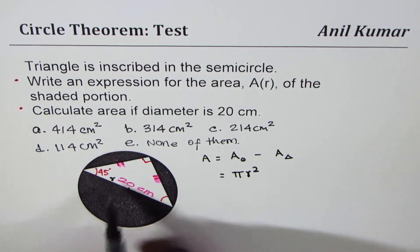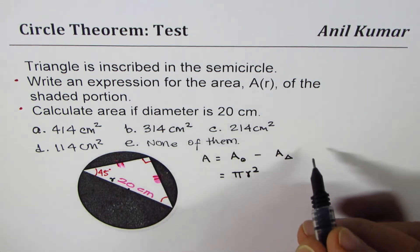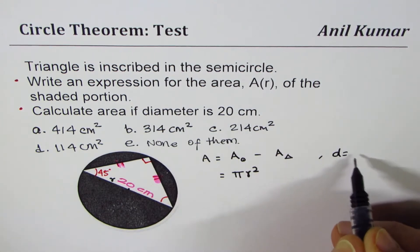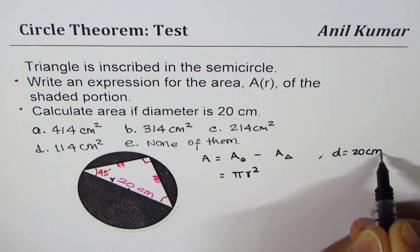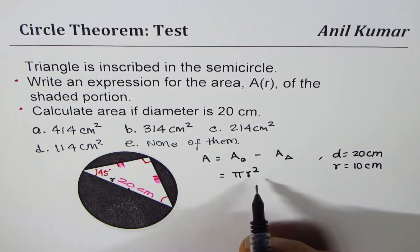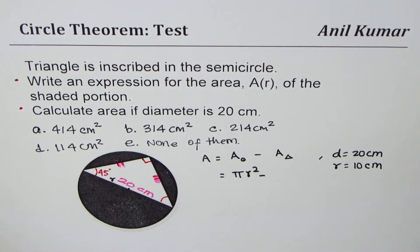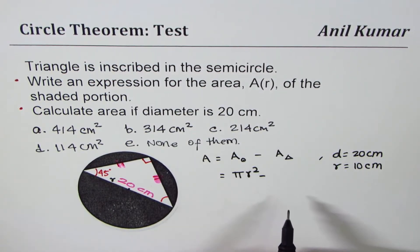If r is the radius, what we are actually given is that diameter is 20. So let me write down here. Diameter is 20 centimeters. So radius is 10 centimeters, half of diameter, minus area of triangle. Now, how do we calculate area of triangle? That's a big issue.